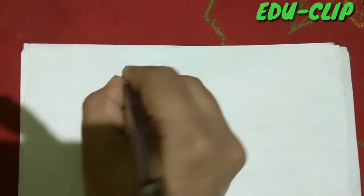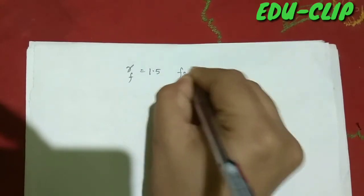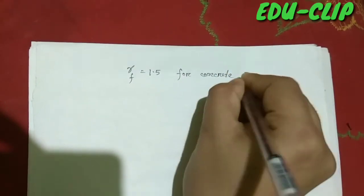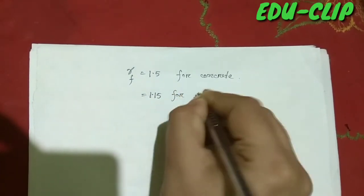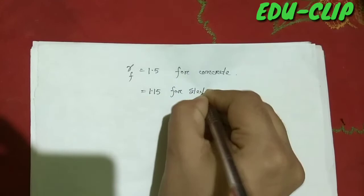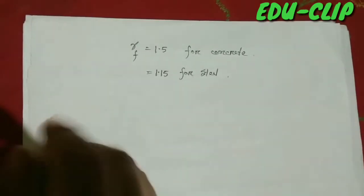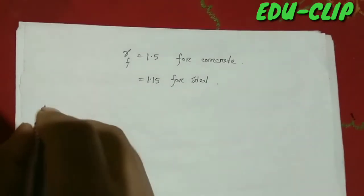The values of the partial safety factor for concrete and steel are different. For concrete, gamma F is 1.5, and for steel it is 1.15. Different partial safety factors are also used when different loads are combined, particularly when we consider the limit state of collapse.